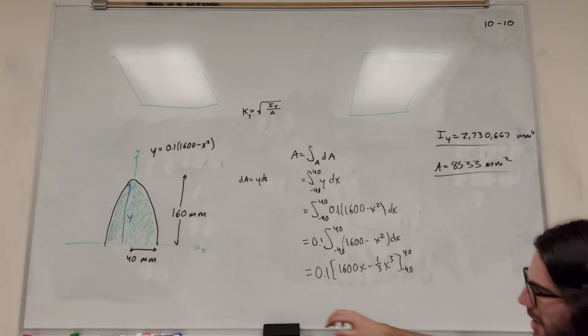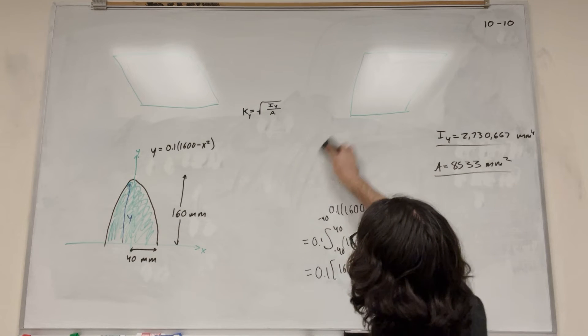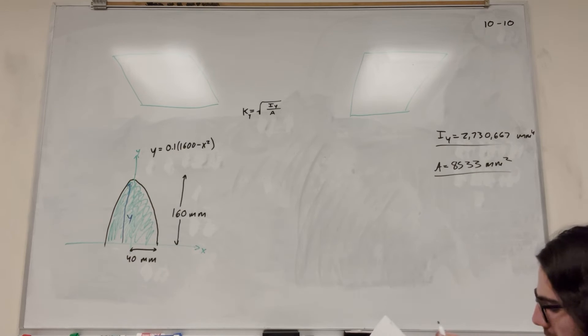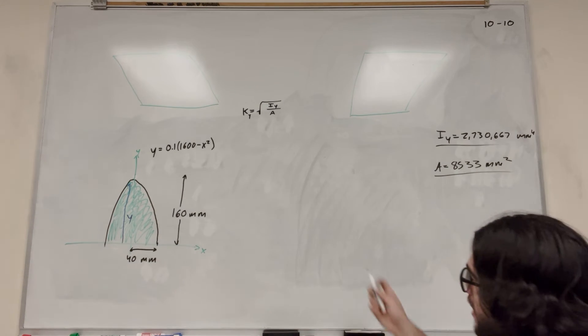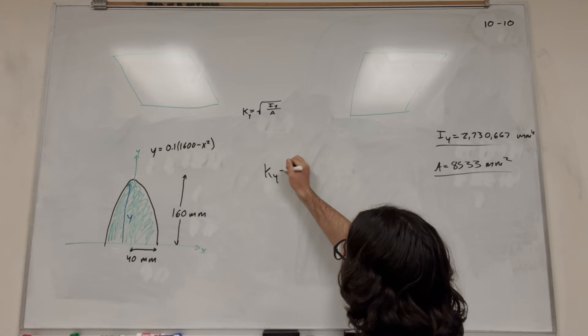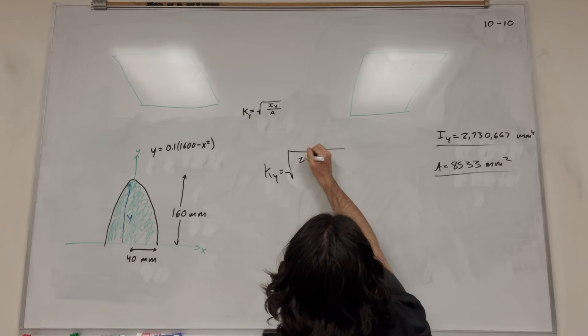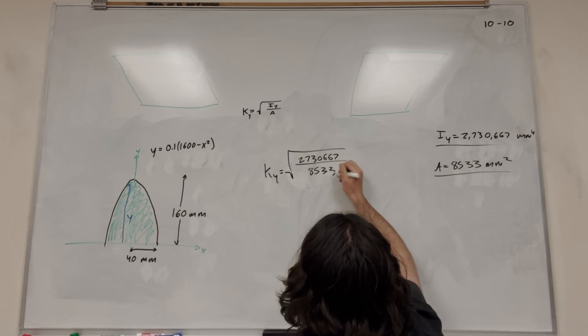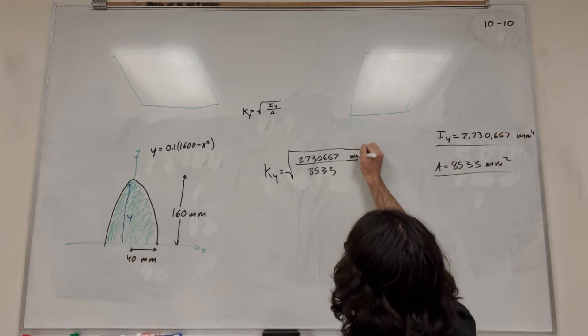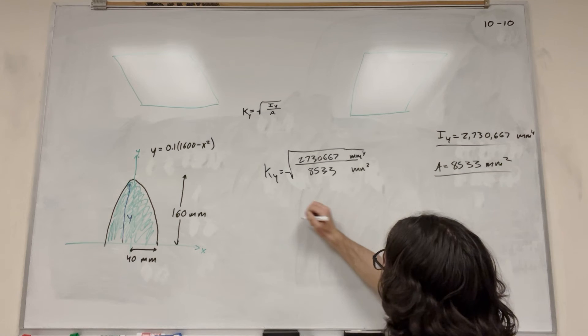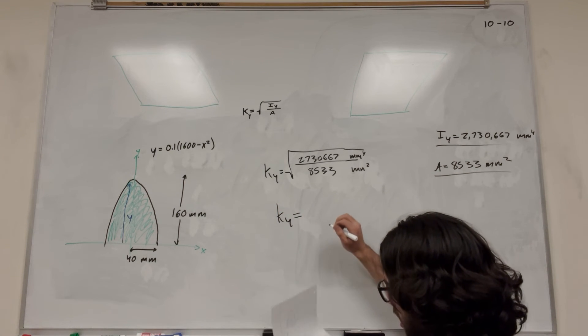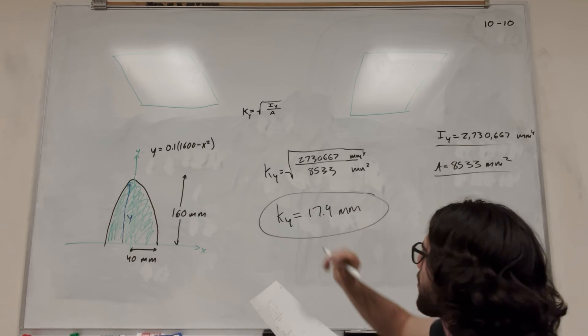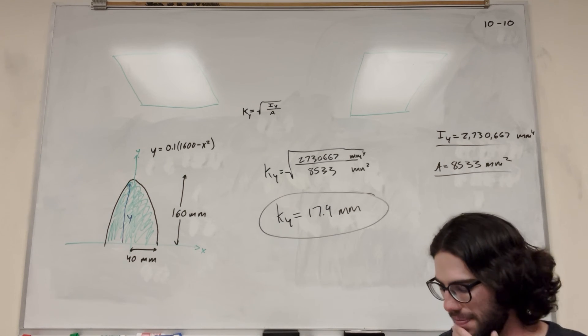Okay, so finally, we have area and moment. Now we can use our formula. So we're just going to put in our numbers. The square root of 2,730,667 over 8533. And of course, millimeters to the fourth over millimeters squared. You're going to get the number 17.9 millimeters. The units are going to make sense. It's all going to work out. So there we go, 17.9 millimeters.